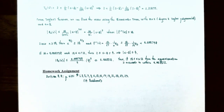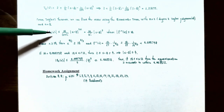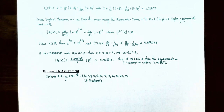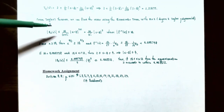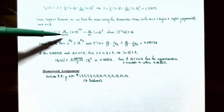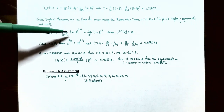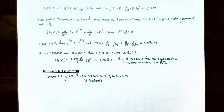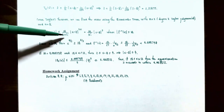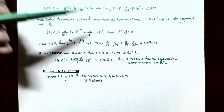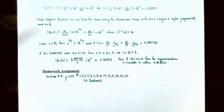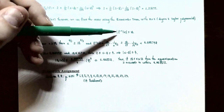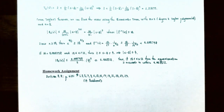From Taylor's theorem we can find the error using the remainder term with n = 2 and a = 8. The absolute value of R_2(x) is less than or equal to M / 3! times |x − 8|³, where M is the maximum value of the absolute value of the third derivative of f(x). Looking at the third derivative, we have (10/27) · (1/x^(8/3)), and since x ≥ 10, we know x^(8/3) ≥ 10^(8/3).